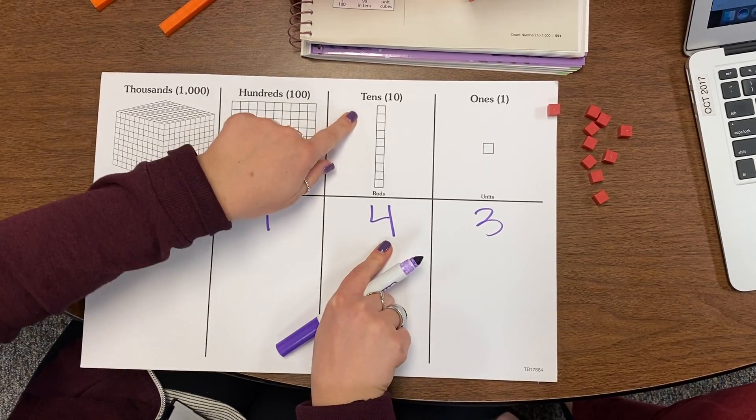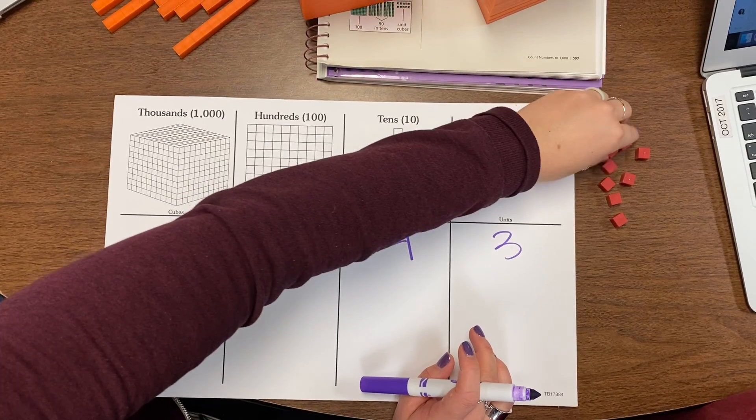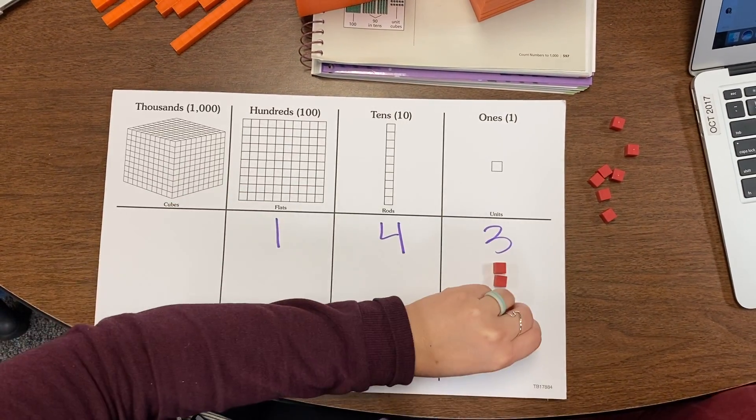We have 1 in the 100's place, we have 4 10's sticks, and we have 3 1's. So let's just start. We have 3 1's in our 1's place.